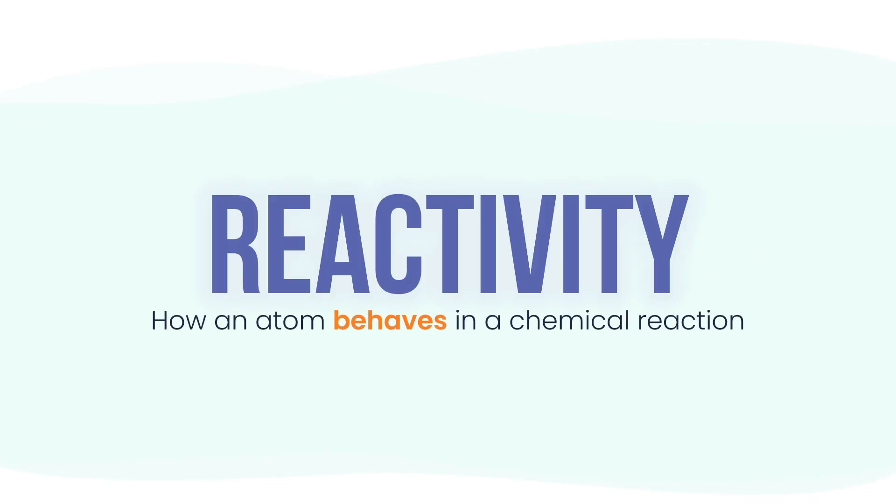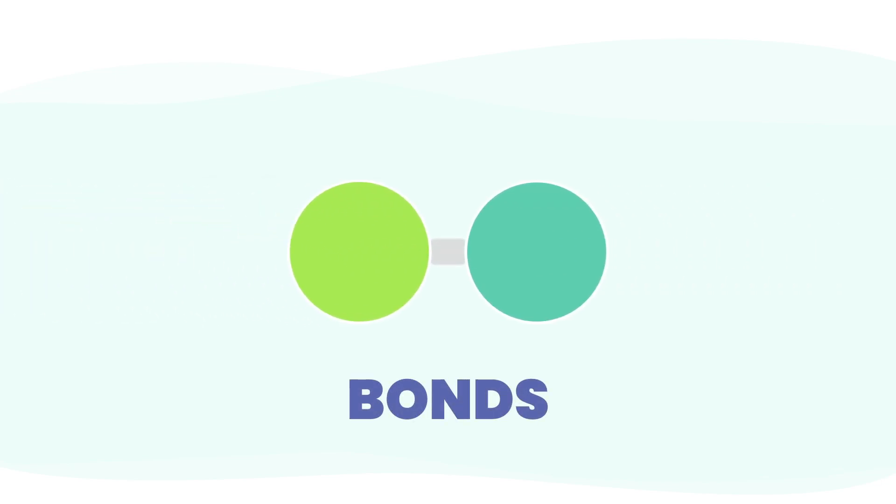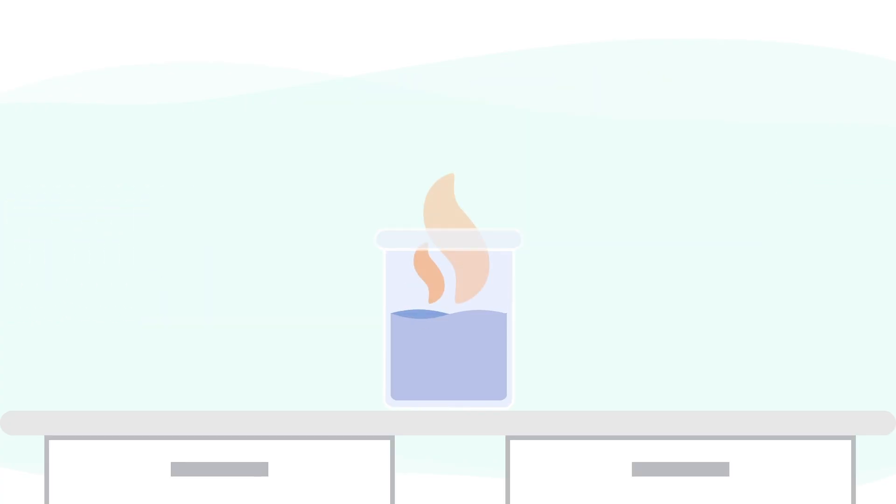Reactivity is how an atom behaves in a chemical reaction - how easily it bonds, breaks, resists, or explodes. It can show up as fizzing, flames, color changes, or total silence. So what controls it?